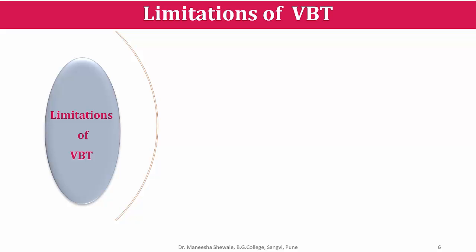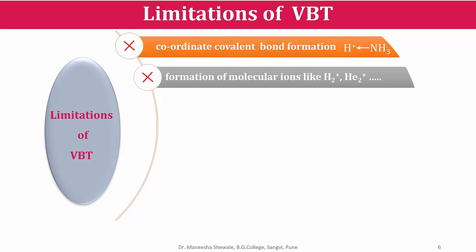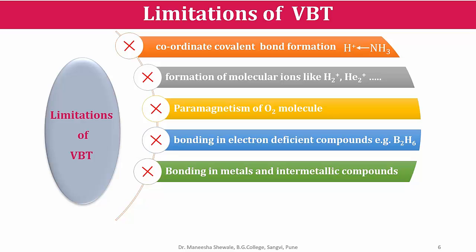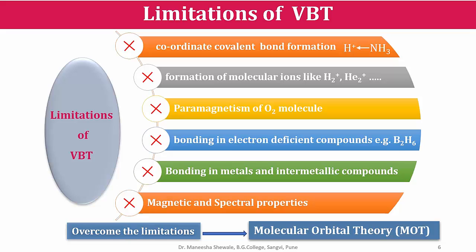VBT can explain the bonding in many molecules, but it also has a few limitations. VBT explains the formation of a covalent bond by sharing of electrons, so it cannot explain the coordinate bond formation where one atom donates the electron pair and the other accepts it. The theory cannot explain the formation of molecular ions like H2+ and He2+. According to VBT, when the oxygen molecule is formed there is pairing of electrons, and due to the absence of unpaired electrons the oxygen molecule would be diamagnetic. But experimentally it is observed that the oxygen molecule is paramagnetic with two unpaired electrons — this paramagnetism cannot be explained by VBT. The theory also fails in explaining bonding in electron deficient compounds, metals, and intermetallic compounds, and cannot explain magnetic and spectral properties. To overcome these limitations, we have the molecular orbital theory.